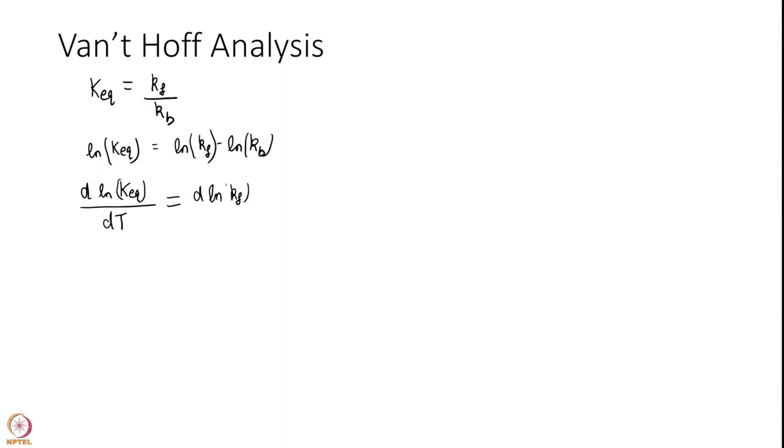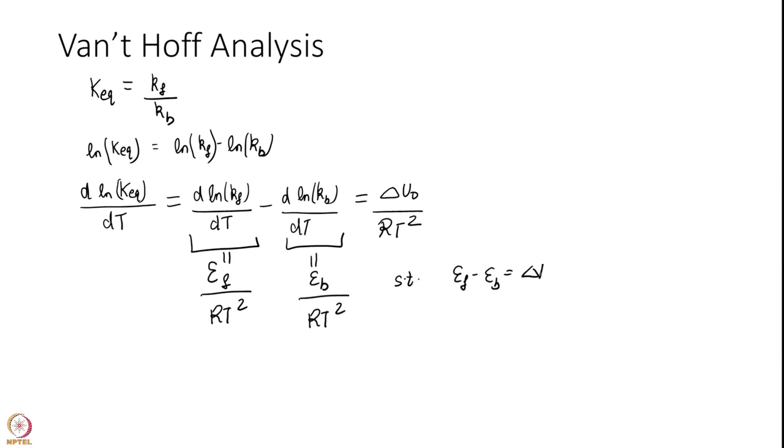At this point Van't Hoff basically looked at this equation and he said well this looks like too much of a coincidence to be true always. So, he said well most likely this itself, this is a rate constant remember not thermal equilibrium, this itself is equal to some energy over RT square and this itself is equal to some energy over RT square such that Ef minus Eb is delta U0.